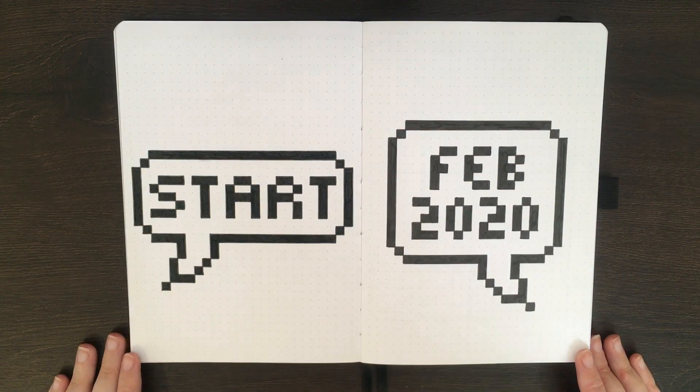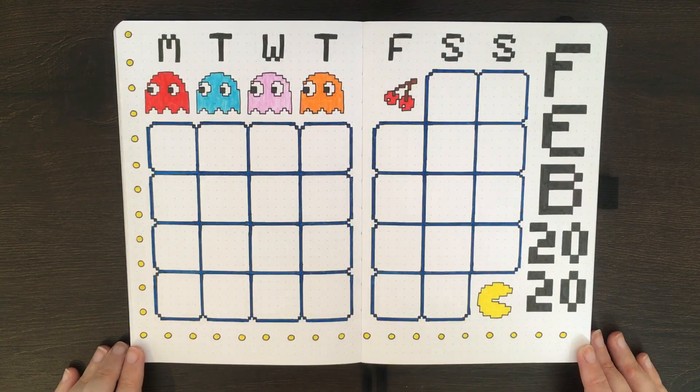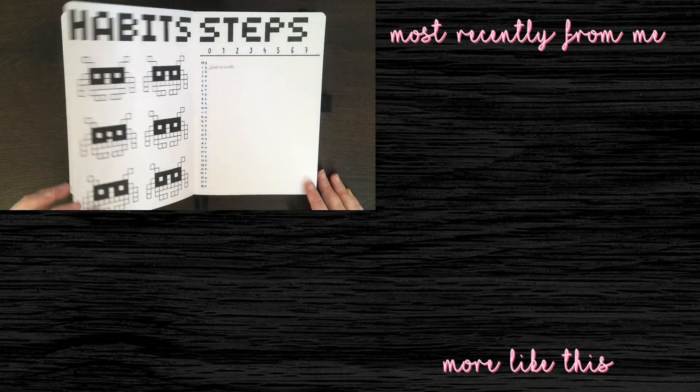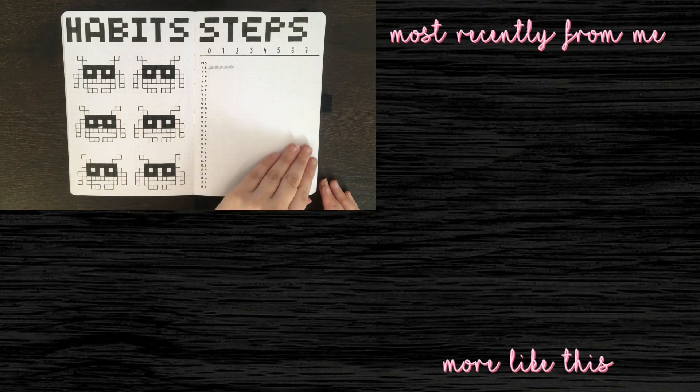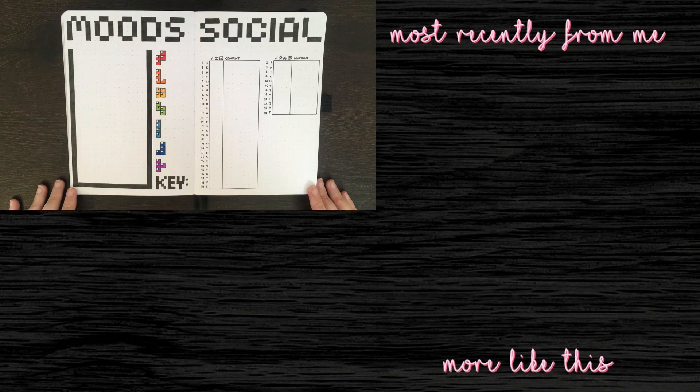Alrighty, so we have my cover page. My monthly log. Habits and steps trackers. And then my mood tracker and social media scheduler.